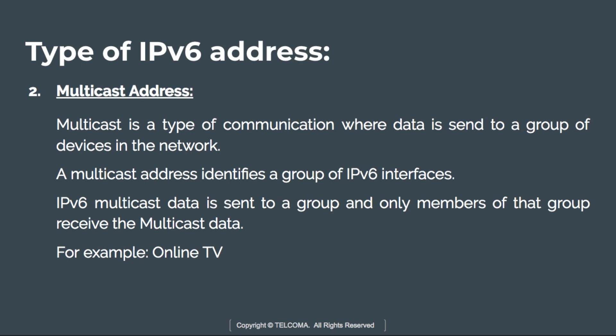Next is the multicast address. Multicast is a type of communication where data is sent to a group of devices in the network. A multicast address identifies a group of IPv6 interfaces. IPv6 multicast data is sent to a group, and only members of that group receive the multicast data. An example is online TV — there is one sender and a group of receivers that receive the particular data.